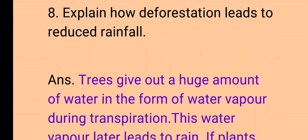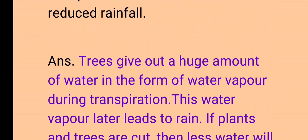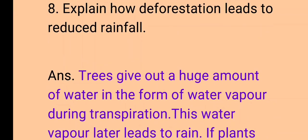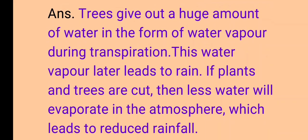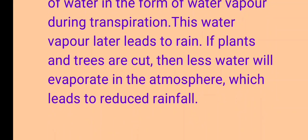Question number 8: Explain how deforestation leads to reduced rainfall. Trees release a huge amount of water in the form of water vapour during transpiration. This water vapour later leads to rain. If plants and trees are cut, then less water will evaporate into the atmosphere, which leads to reduced rainfall.